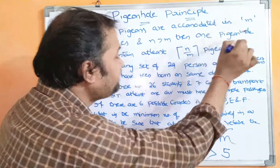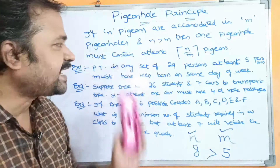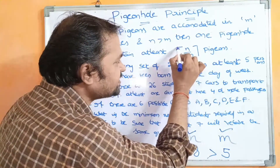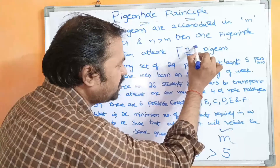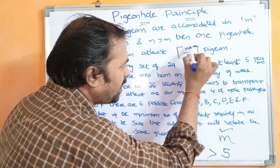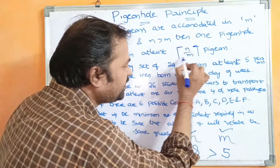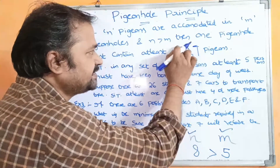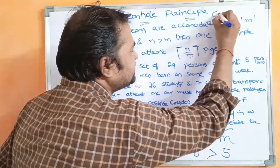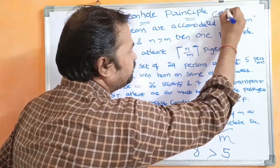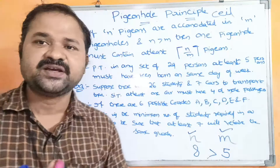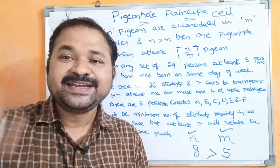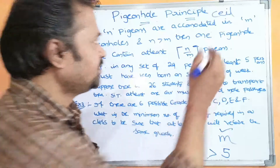Then, one pigeonhole must contain at least the ceiling function of n by m pigeons. Here we have only the upper square bracket — this function is called the ceiling function.